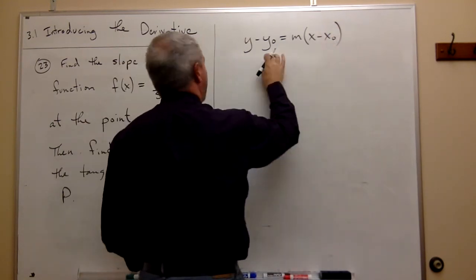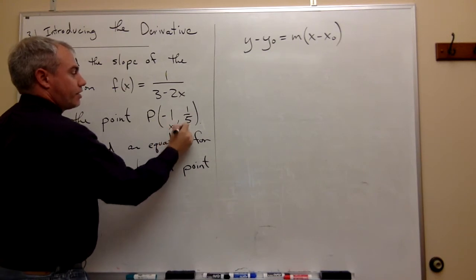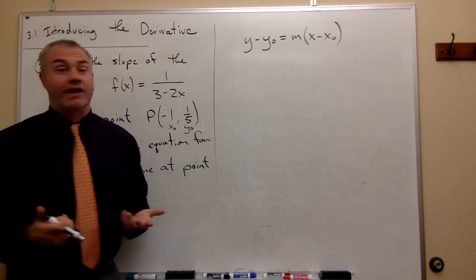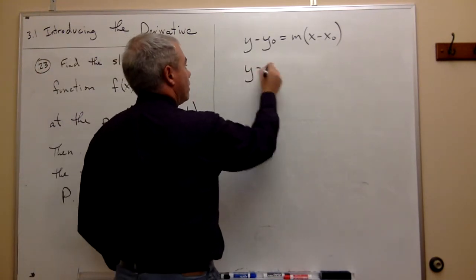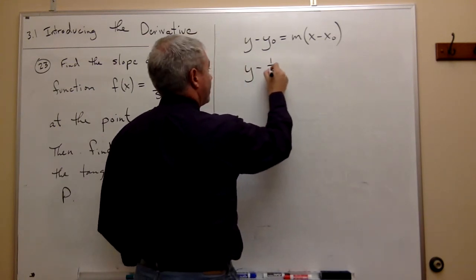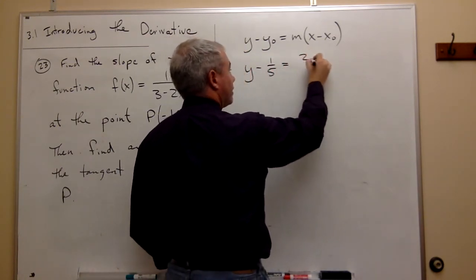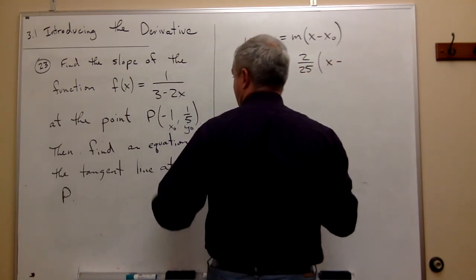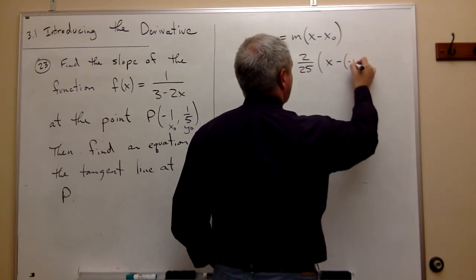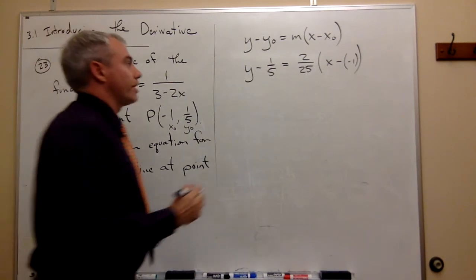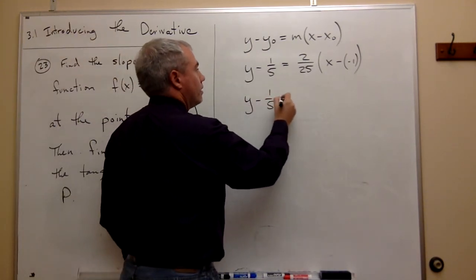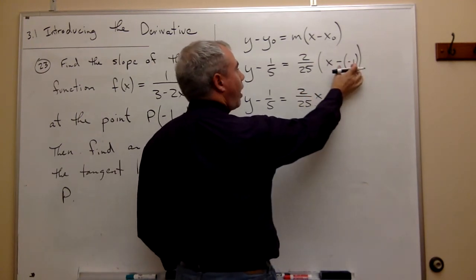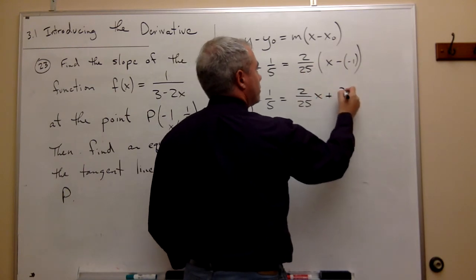Where x0, y0 is the point — here x0 is negative 1 and y0 is one fifth — and m is the slope we just calculated, which was 2 over 25. Plugging things in, I get y minus 1 fifth equals 2 over 25 times x minus negative 1, which gives a positive 1, so plus 2 over 25.